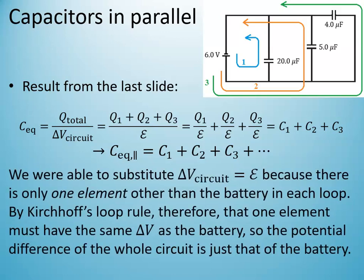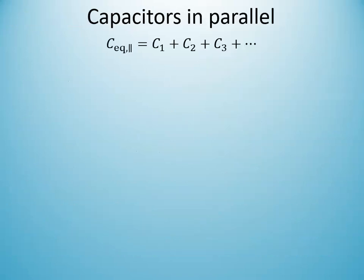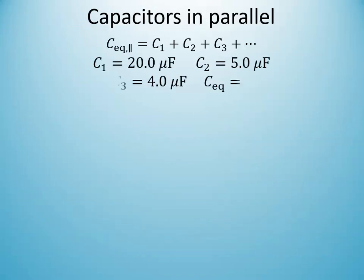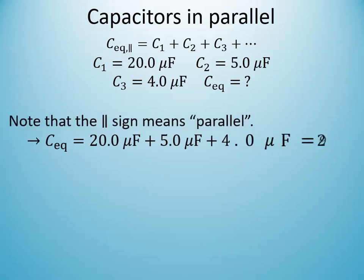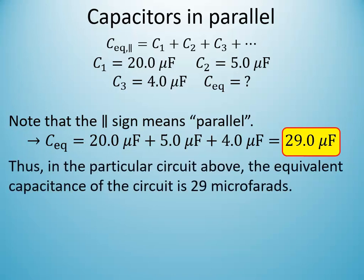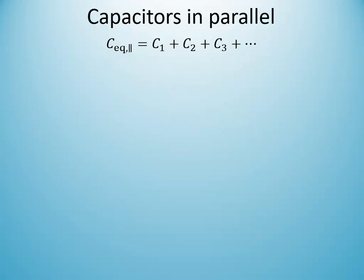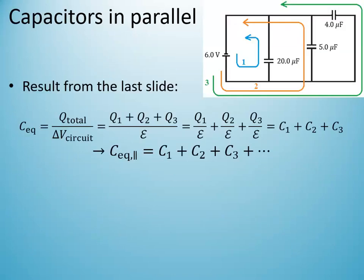That result was derived using Kirchhoff's loop rule, and it works for any number of capacitors. For our circuit with 20, 5, and 4 microfarads in parallel, the equivalent capacitance is simply 20 + 5 + 4 = 29 microfarads.